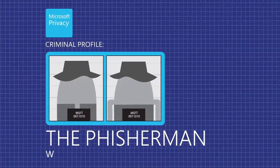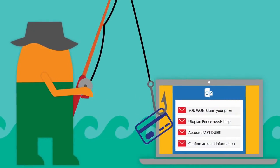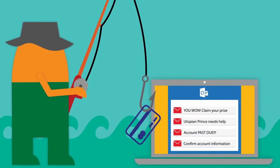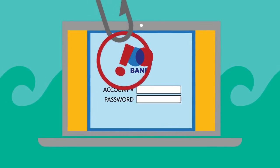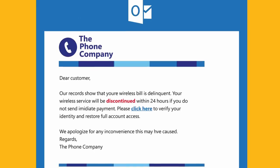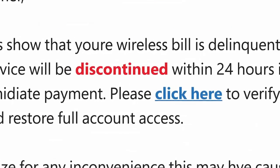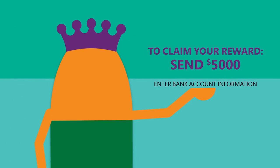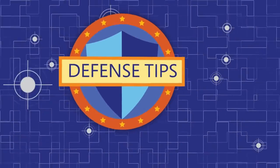Profile: the fisherman. Wanted for fraud. Impersonates banks, credit card companies and foreign royalty. Demands confirmation of account numbers and/or passwords. May threaten closure of accounts unless immediate action is taken. Often promises a big cash reward for a small cash outlay.